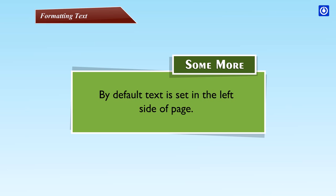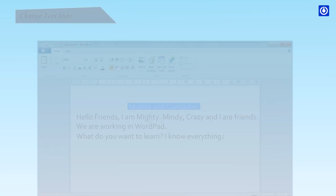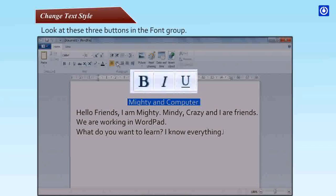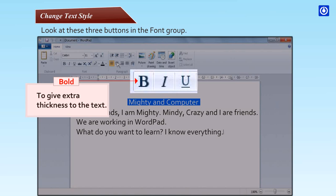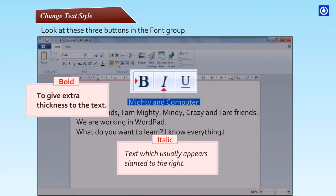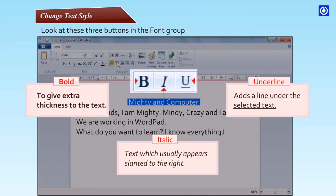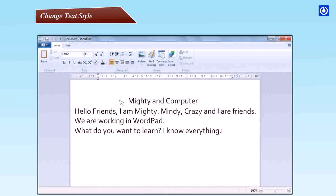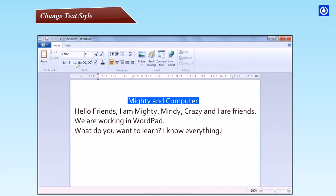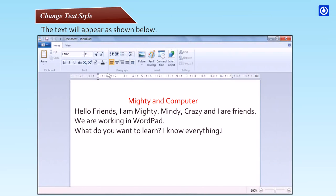By default, text is set on the left side of the page. Look at these three buttons in the Font group: Bold — to give extra thickness to the text; Italic — text which usually appears slanted to the right; Underline — adds a line under the selected text. Step 1: Select the text Mighty and Computer. Step 2: Click on the Home tab to use buttons in the Font group. To make bold, italic or underline, use the buttons. Step 3: To change font color, click the down arrow and choose a color of your choice. The text will appear as shown below. Wow, now it looks more attractive!